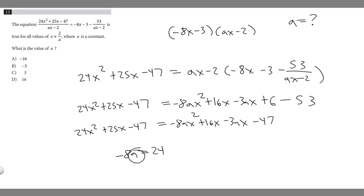So if minus 8a has to equal 24, if we divide by minus 8, we're going to get that a equals 24 divided by minus 8, which is minus 3.